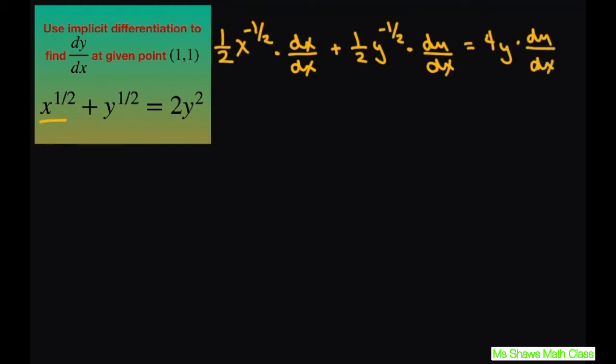Now this derivative of x dx is just 1. So now I'm going to go ahead and rewrite this as 1 divided by 2 square root of x plus 1 divided by 2 square root of y times dy dx equals 4y times dy dx.